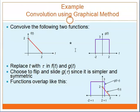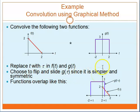Let us see this example — convolve the following two functions. You are given Ft convoluted with Gt. First of all, you have to replace T with tau in Ft and Gt, so Ft becomes Ftau and Gt becomes Gtau. Choose to flip and slide Gtau since it is simpler and symmetric, so Gtau becomes Gt minus tau.